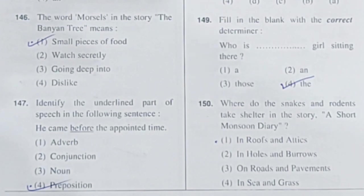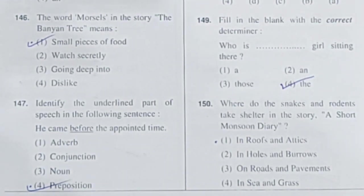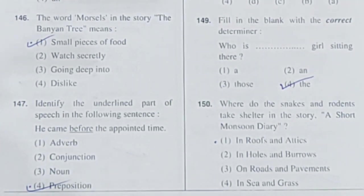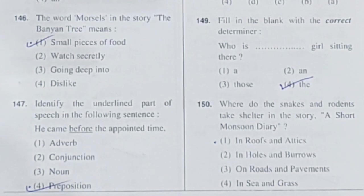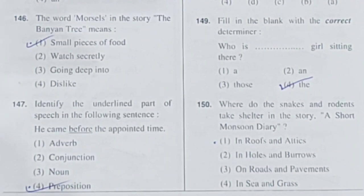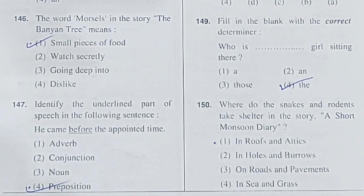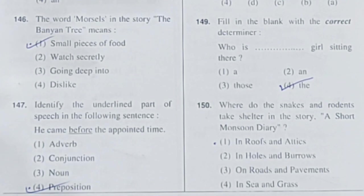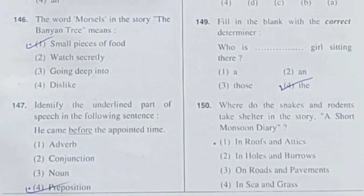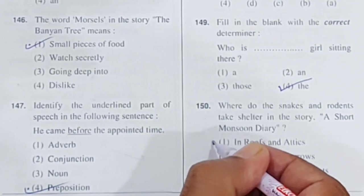Question 150 (last question for today): Where do the snakes and rodents take shelter in the story 'A Short Monsoon Diary'? They take shelter in roofs and attics. The correct answer is: in roofs and attics.